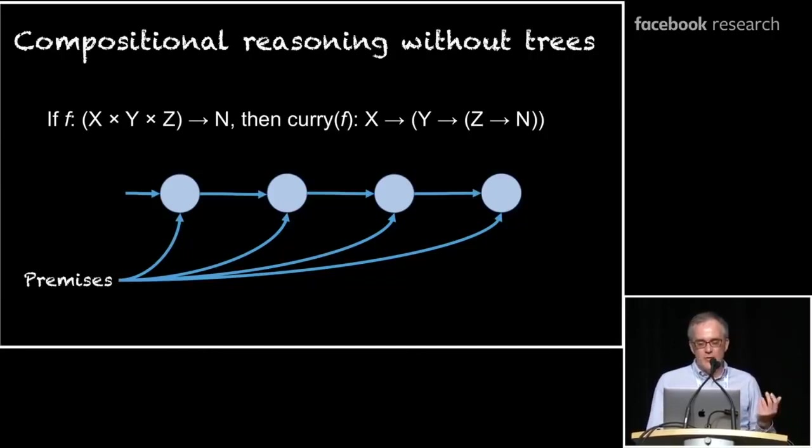The curried function takes one argument and then returns a function, which will take an argument and return yet another function, which takes a third argument and then will give you your result. And it's perhaps reasonable to assume that we can use sequence models to do precisely this kind of computation, taking arguments one at a time.